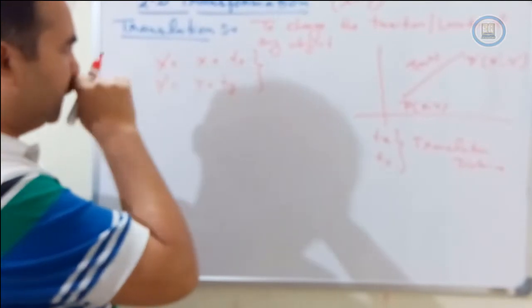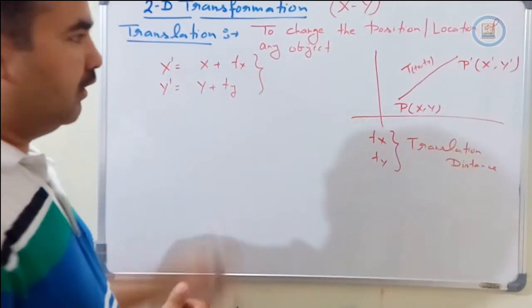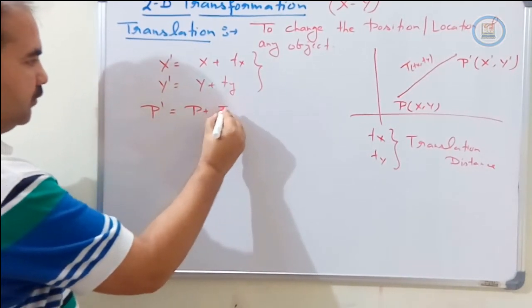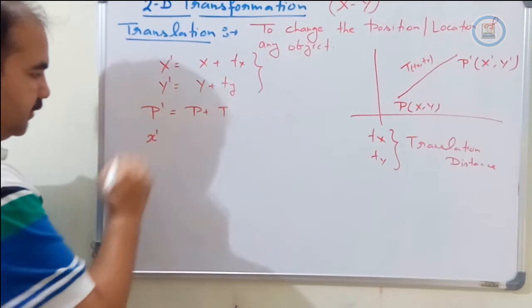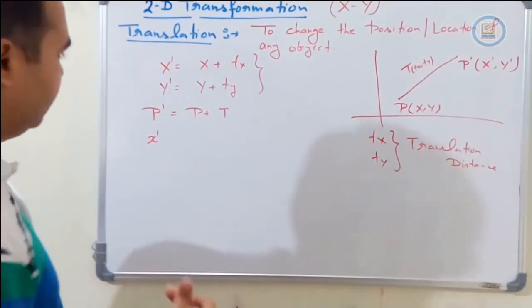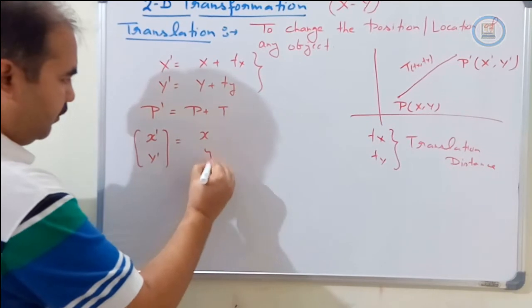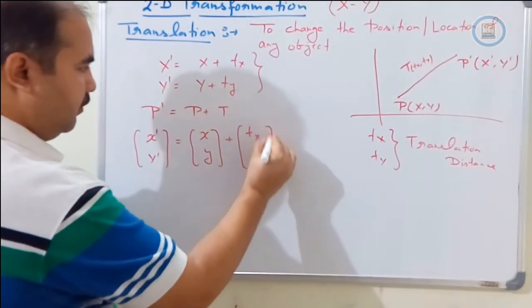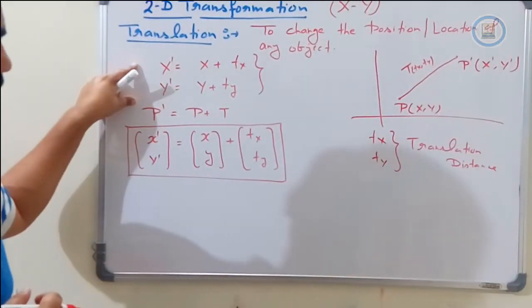Since we cannot do Cartesian operations directly in computer graphics, we need to convert this into matrix format. We represent this as P' = P + T, where T represents the translation operation. The first matrix representation is: [x', y'] = [x, y] + [tx, ty], as column vectors (2×1 matrices).